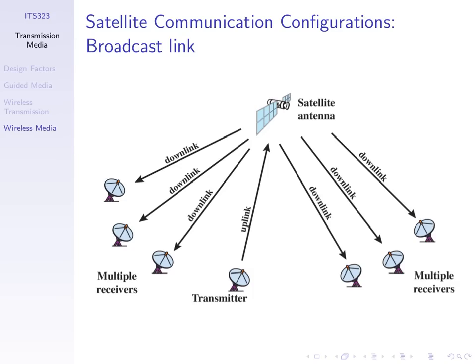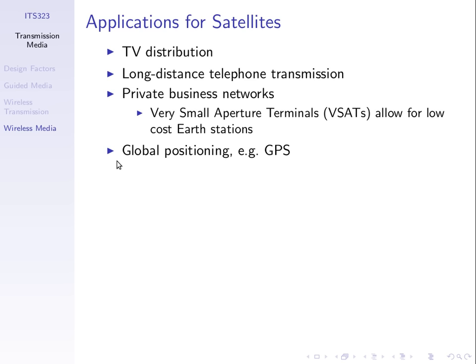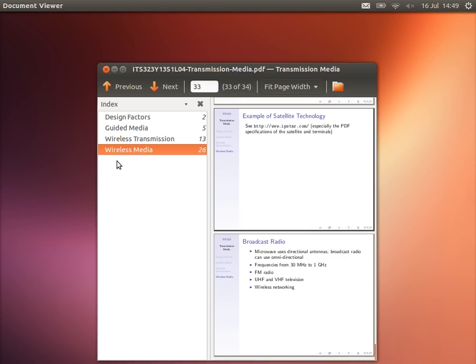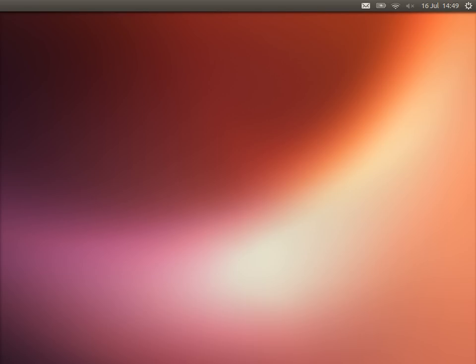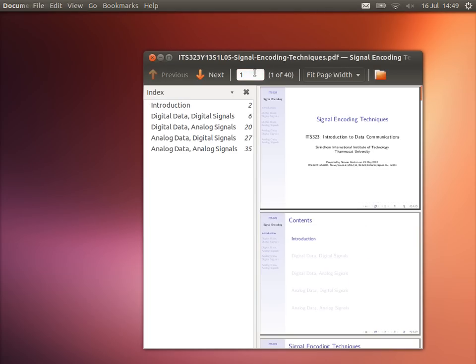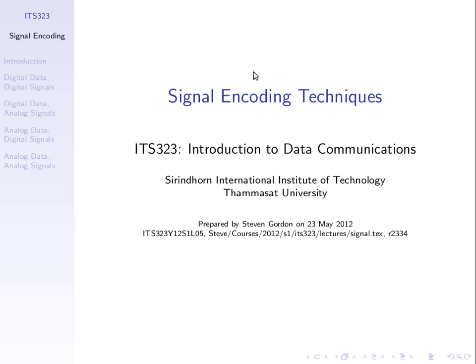I want to move on to the next topic: signal encoding techniques. This goes back to things we've already discussed — we have data to send from A to B, we transmit some signal from A to B that carries that data. There's some mapping from the data to the signal, and how we do that mapping is called signal encoding. We encode our data onto a signal.